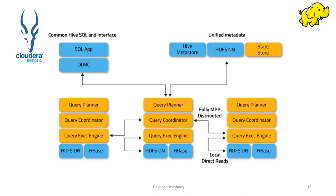Next is Cloudera Impala. Impala is Cloudera's SQL query engine for metadata stored in an Apache Hadoop cluster, running open source massively parallel processing (MPP). Impala enables users to run low-latency SQL queries on data stored in HDFS and Apache HBase without requiring additional data movement or transformation.